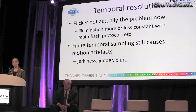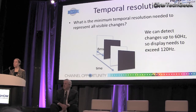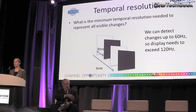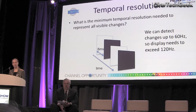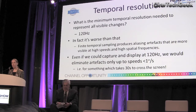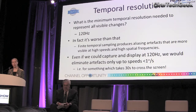That still happens today — you get motion artefacts, whether judder or blur. We can ask what temporal resolution a display would need to represent all visible changes. You might think that if we can see change up to 60 Hz, we'd need a 60 Hz display and capture. But it's worse than that: to represent 60 Hz on your display, the display itself has to be updated at 120 Hz. And in fact it's even worse, because finite temporal sampling in both capture and display introduces aliasing artefacts, whose visibility depends on speed and spatial frequency — they're worse for fast-moving objects and at high spatial frequencies.